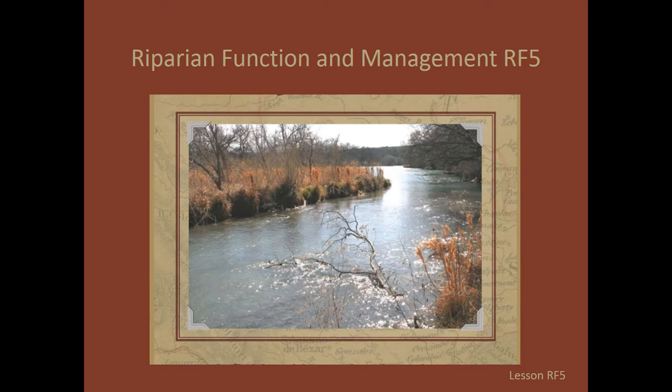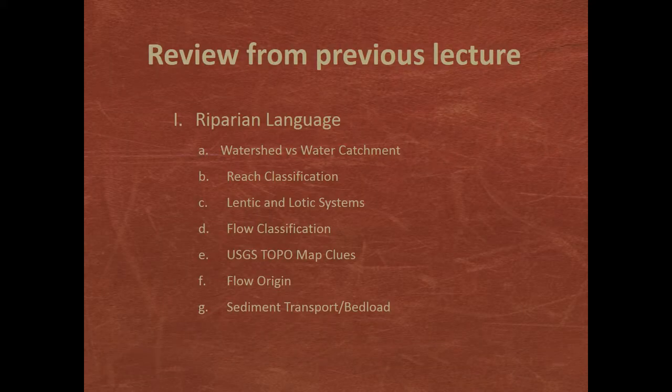Welcome to the fifth lecture in Riparian Function and Management. In our last meeting, we continued discussing some common riparian language. You were introduced to watershed versus water catchment, reach classification, lentic and lotic systems, flow classification, potential and capability, USGS topo map clues, flow origin, and sediment transport and bed load. Your homework assignment was to choose a creek for observations and find the site on a USGS topo map. A good site will be convenient to visit and visible, with perennial flow and a USGS gauge nearby.